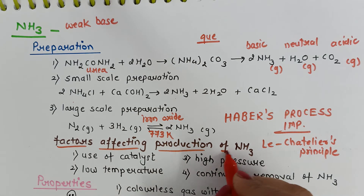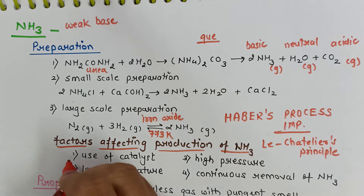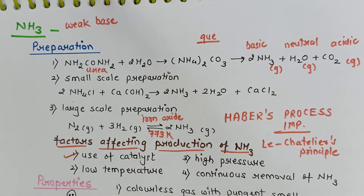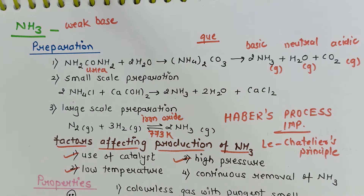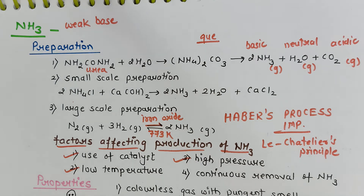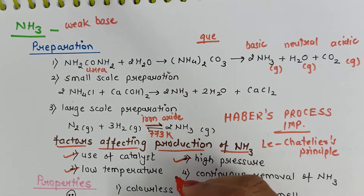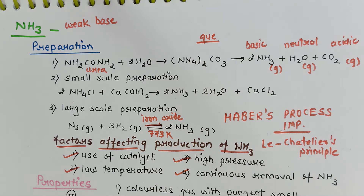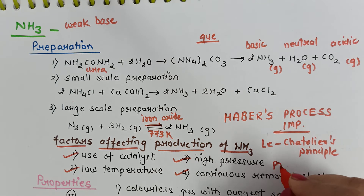To increase the production of ammonia, we must use a catalyst like iron oxide. The reaction is carried out at high pressure and low temperature. Continuous removal of ammonia also helps move the reaction forward, thereby increasing the overall production of ammonia.